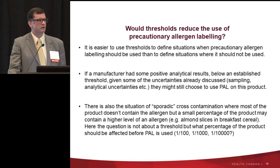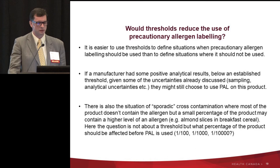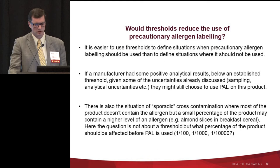If a manufacturer tests their food and finds an allergen level above the threshold, it's clear they must put a precautionary statement on that food. But if testing finds positive analytical results that are always below the threshold, given all the uncertainties around sampling and analytical methods, that manufacturer might still choose to put a precautionary statement on the food anyway.